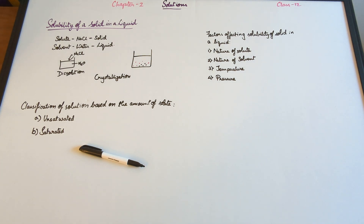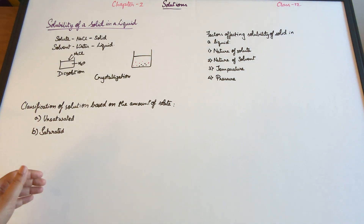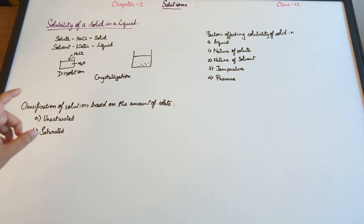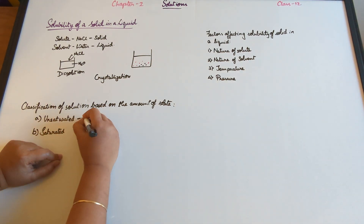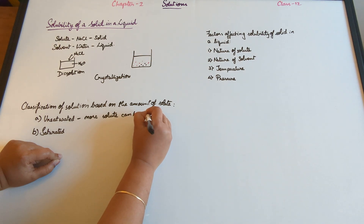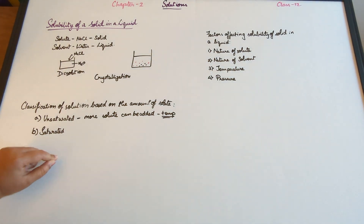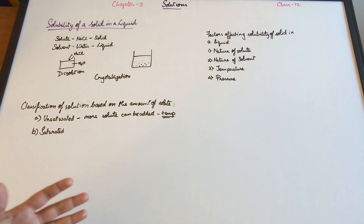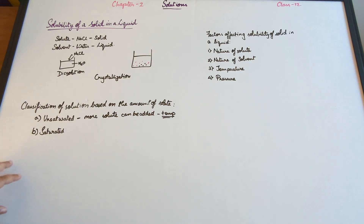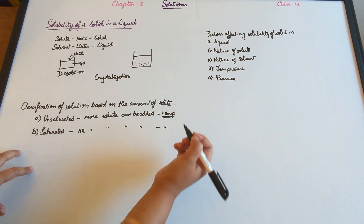These are the two processes that take place, but it's not necessary that both always occur. Based on the amount of solute in the solvent, we have two different types of solutions. An unsaturated solution is one where more solute can be added at a particular temperature. A saturated solution is one where no more solute can be added at that particular temperature.